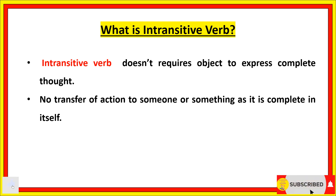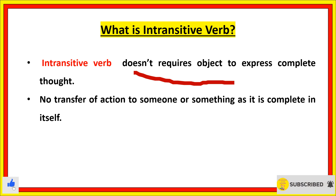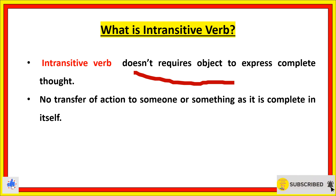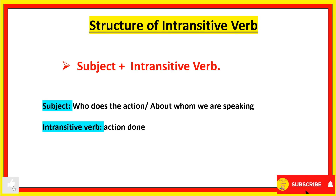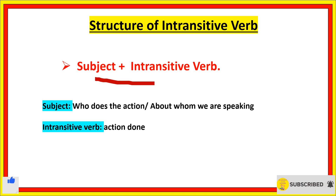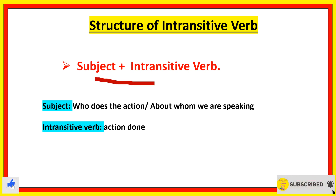Back to our topic: what is an intransitive verb? An intransitive verb doesn't require an object — that is the main difference between transitive and intransitive. There is no transfer of action to someone or something, as the action is complete in itself. The structure of an intransitive verb is simply: subject plus intransitive verb, with no object needed.